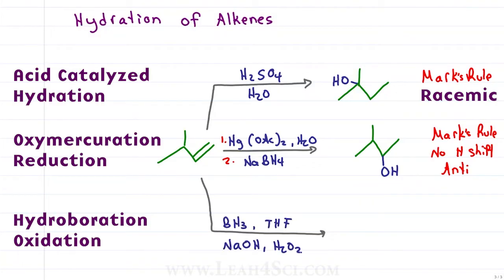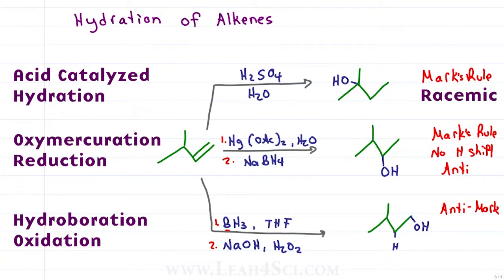In hydroboration-oxidation, BH3 grabs onto the pi bond so that hydrogen goes to the more substituted carbon and boron — ultimately replaced with hydroxide — goes to the less substituted carbon. This reaction is anti-Markovnikov because OH is on the less substituted carbon, but hydroxide and hydrogen add to the same face of the pi bond, giving us a syn addition.